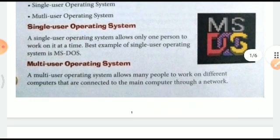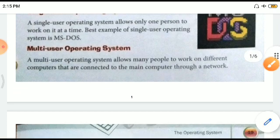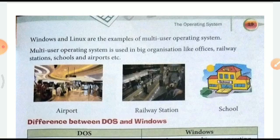Multi-user operating systems allow many people to work on different computers that are connected to the main computer through a network. Windows and Linux are examples of multi-user operating systems. Linux is basically used in government institutes. Multi-user operating systems are used in big organizations like offices, railway stations, schools, and airports, because there are many places where work is going on at the same time.